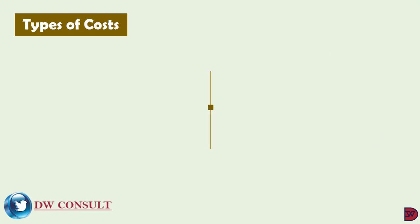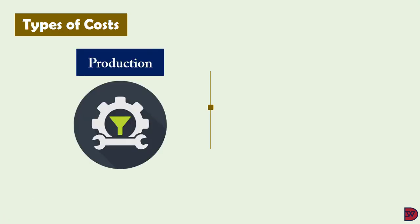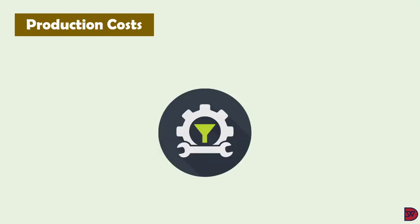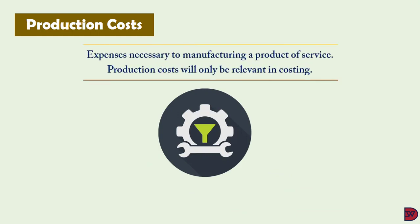There are production and non-production costs, and the total cost of a product is the addition of the two. Production costs, also known as manufacturing costs, are the expenses incurred to transform raw materials or semi-finished goods into final products. Production costs include materials, labor, factory expenses, and overheads.